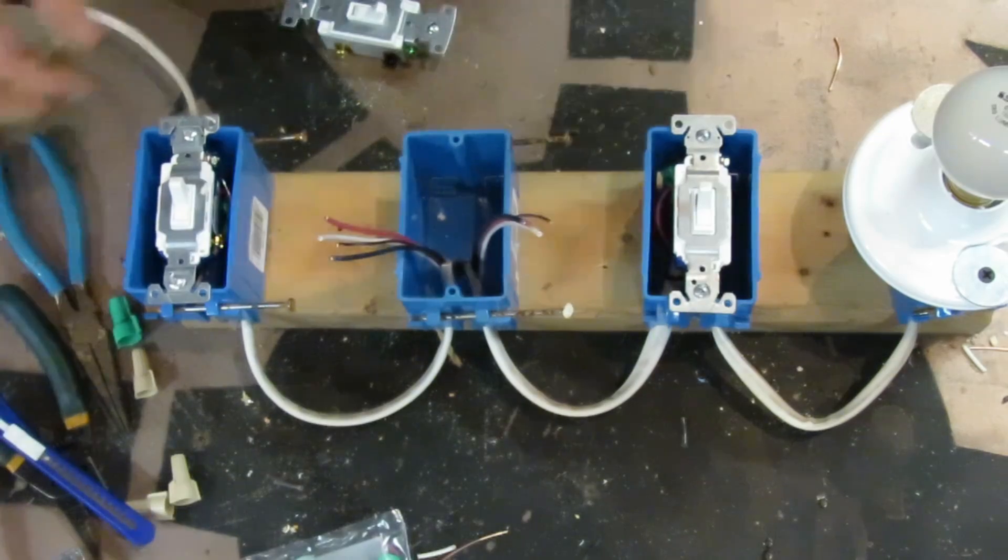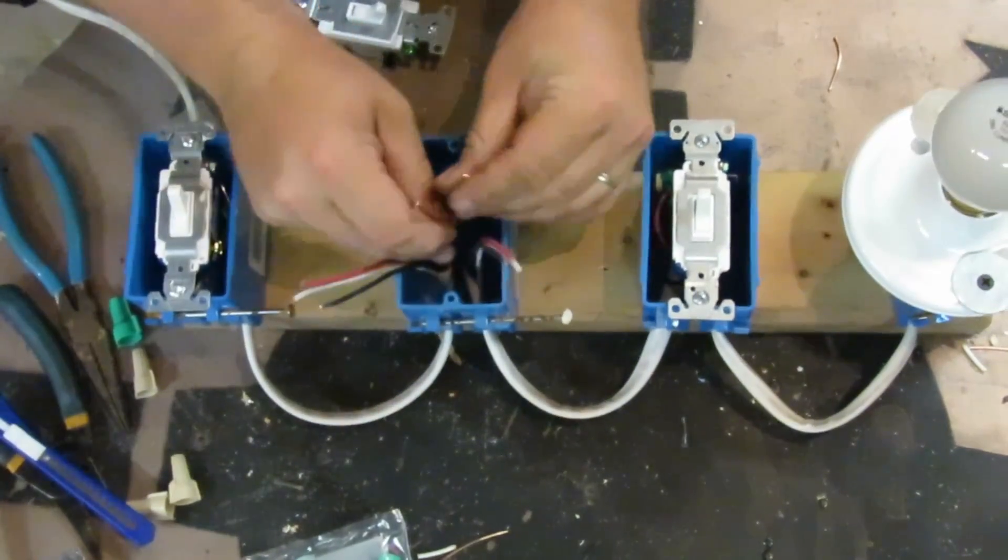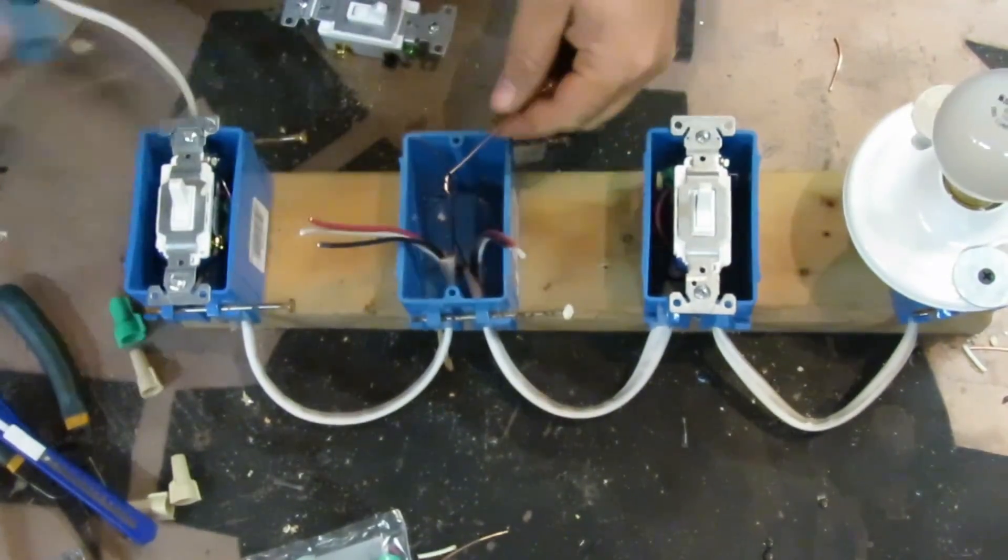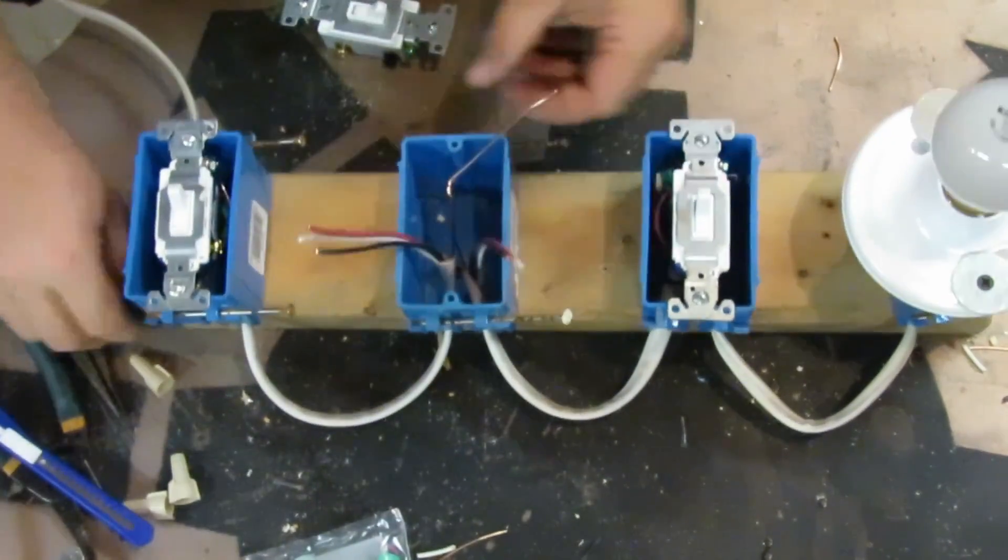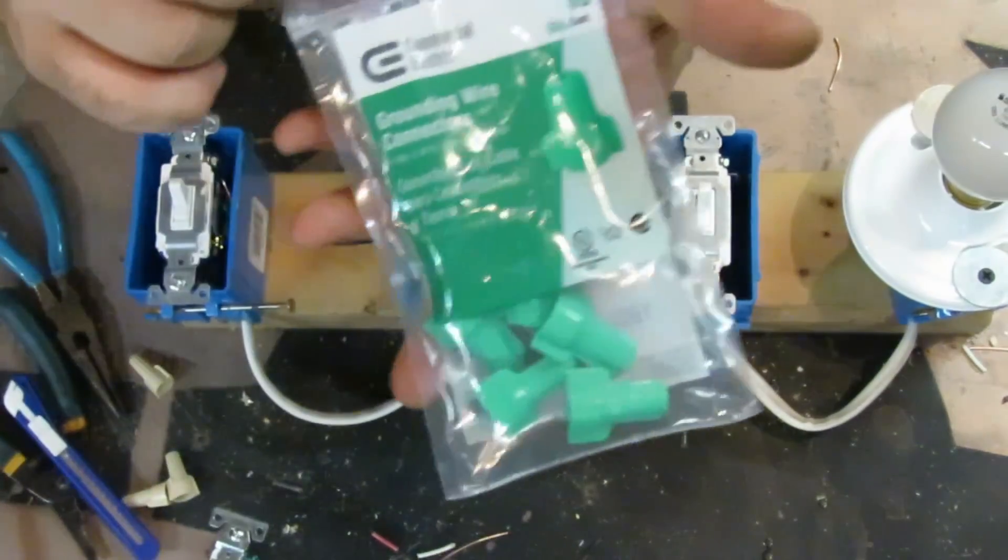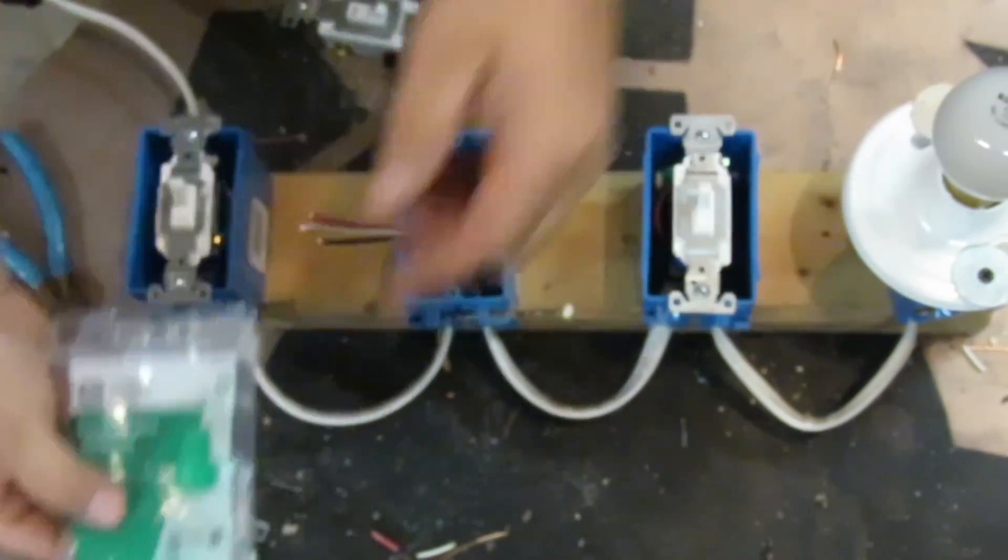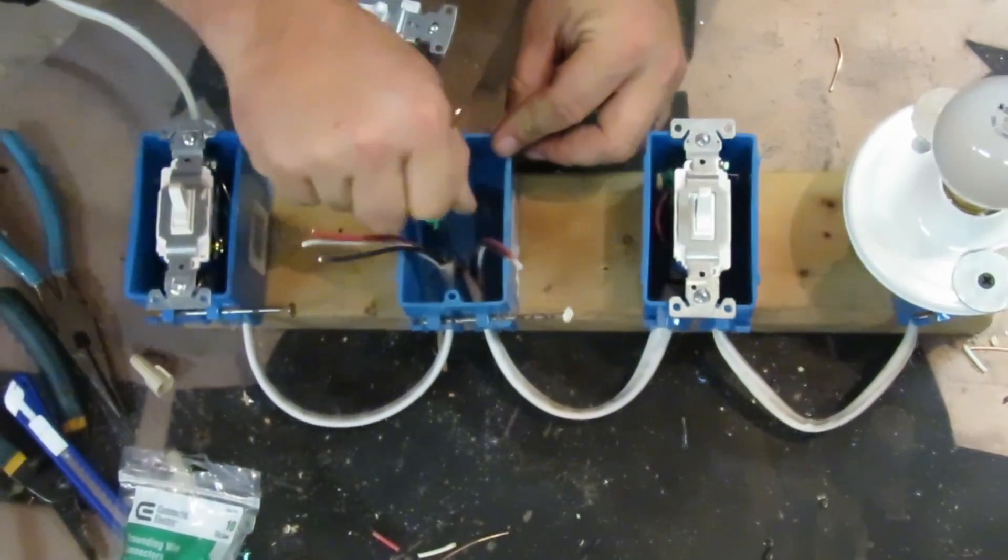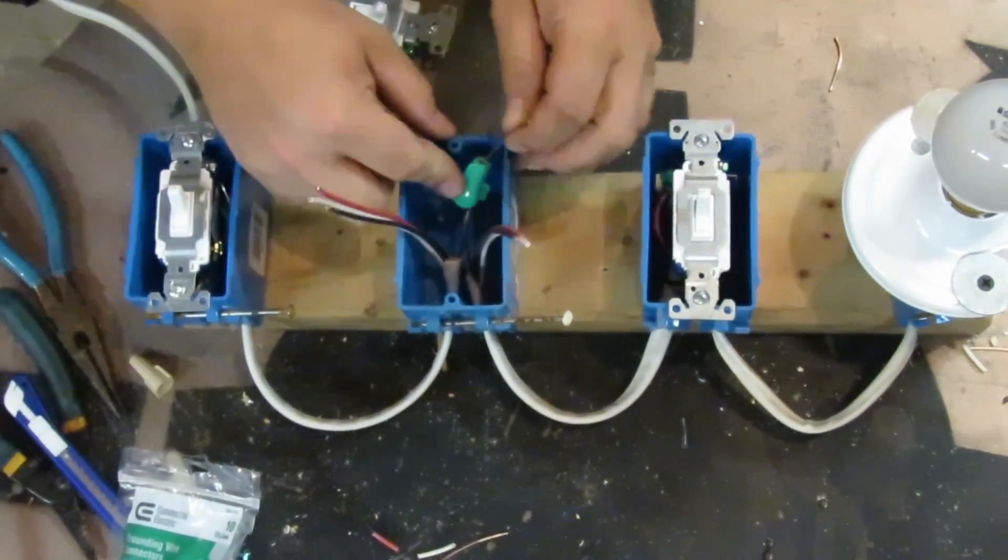Next I'm going to take the ground wires and twist them together, and then I'm going to trim off one of the two sticking out. I've got these nice ground wire nuts that have a hole on the end, so you can thread that wire through. When you twist it on, it makes a nice ground connection.